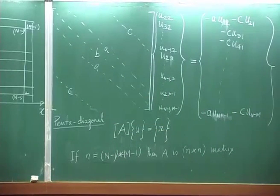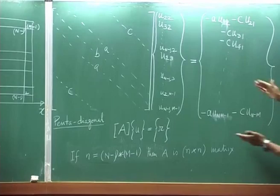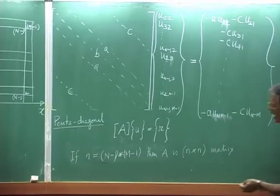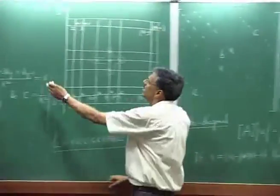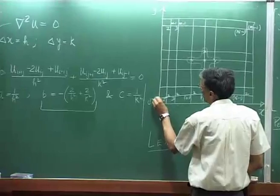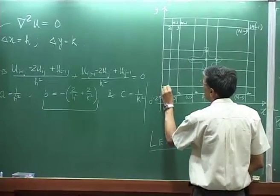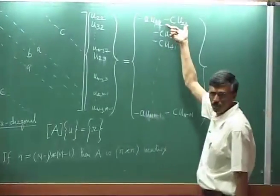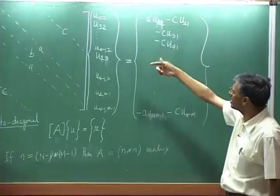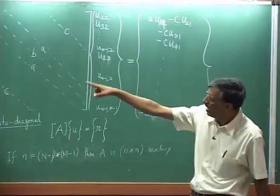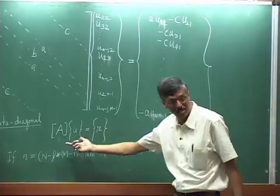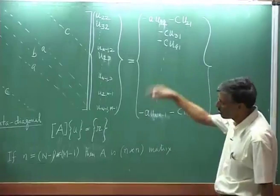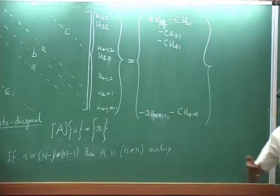When I write this equation for a corner point, the neighboring points on the boundary contribute to those terms. So you do have a homogeneous governing equation, but its linear algebraic form comes out as an inhomogeneous term, and this right-hand side is contributed by the boundary conditions.